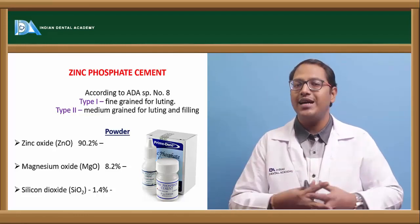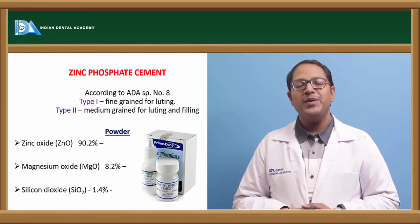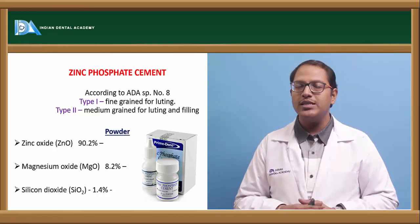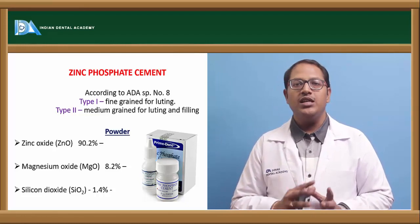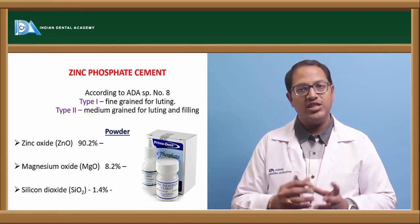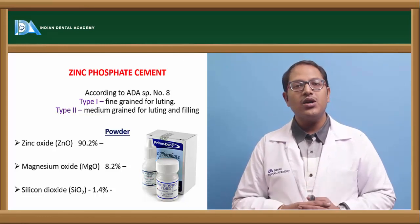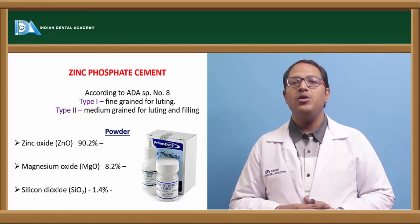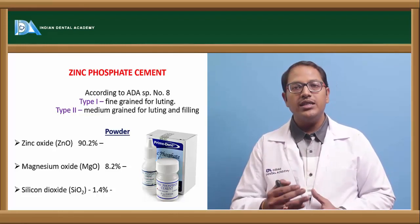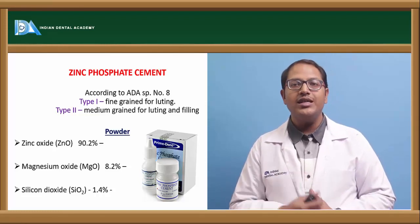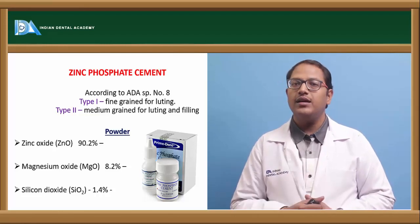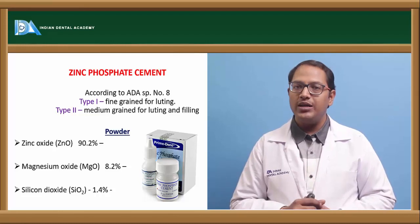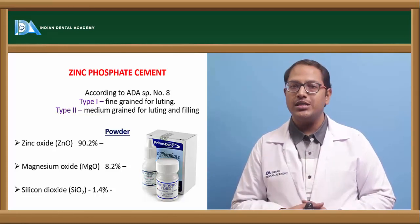According to ADA specification number 8, zinc phosphate is classified into Type 1 for luting and Type 2 for restoration. The powder consists of zinc oxide (90%), magnesium oxide (8.2%) — which decreases the temperature of calcination — silicon dioxide (1.4%) acting as a filler, and bismuth oxide Bi₂O₃ (1%) which imparts smoothness to the restoration.